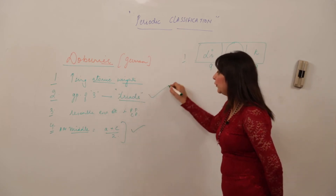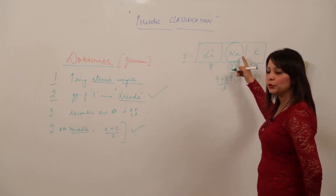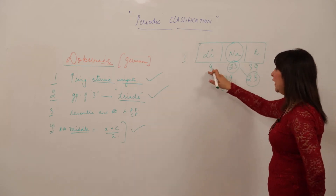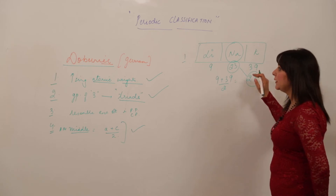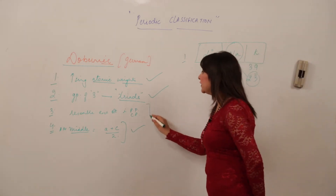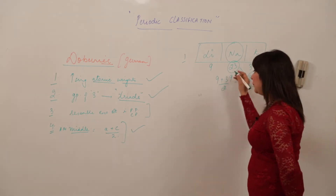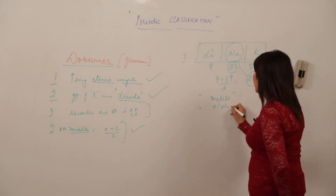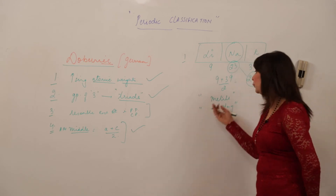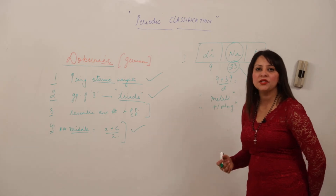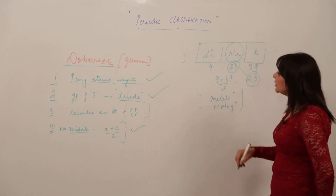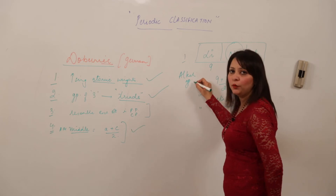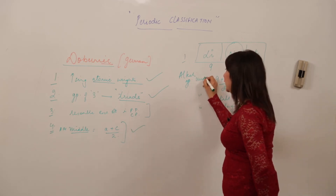The atomic weights in this triad — 9, 23, 39 — are in increasing order, satisfying the first criterion. They are three elements grouped together as a triad. And all three resemble each other in physical and chemical properties: all are metals with +1 valency. He named this the alkali group triad because when dissolved in water they form strong alkalis.